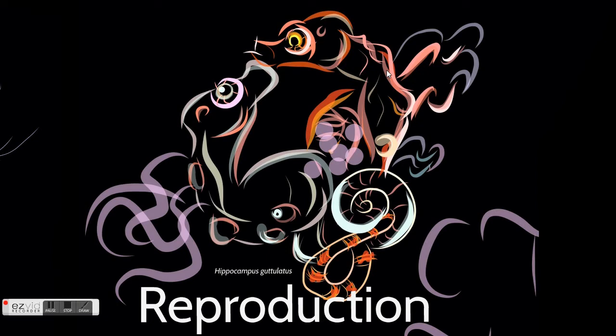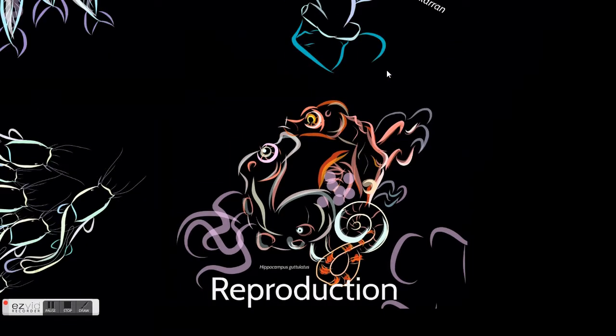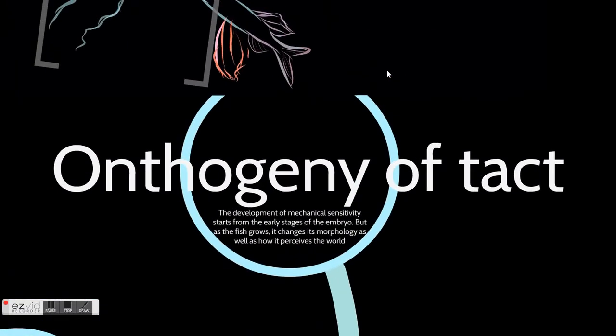Even though fish will have touch all along their life, the way they perceive it changes as they grow. The development of mechanical sensitivity starts from the early stages of the embryo. But as the fish grows, it changes its morphology as well as how it perceives the world.